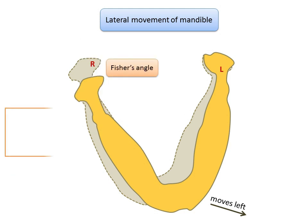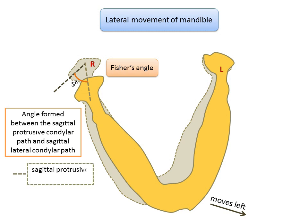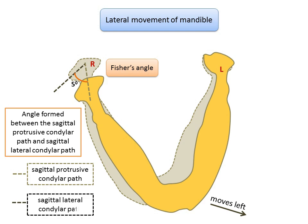Fisher's angle is the angle formed between the sagittal protrusive condylar path and the sagittal lateral condylar path, with a mean value of 5 degrees. The gray dotted line indicates the sagittal protrusive condylar path and the black dotted line indicates the sagittal lateral condylar path. The sagittal lateral condylar path is the orbit of the center of the non-working condyle traced on the sagittal plane; it is usually longer and steeper than the sagittal protrusive condylar path.